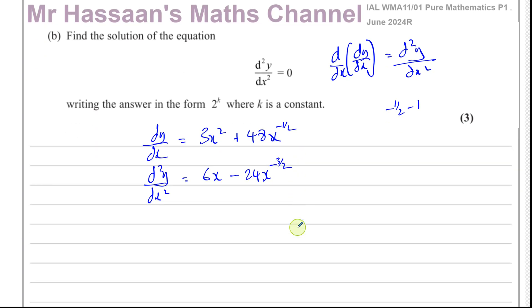And we have to solve the equation d²y/dx² equals zero. So we're going to solve the equation 6x minus 24 over x to the power of three over two equals zero. So I want to solve this equation. I'm going to get rid of the fraction. As this is an equation, you can multiply both sides by the same thing. So I'll multiply both sides by x to the power of three over two. This side will stay zero, zero times anything is zero.